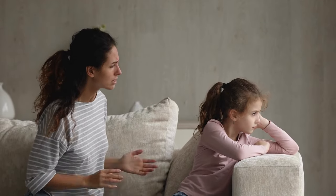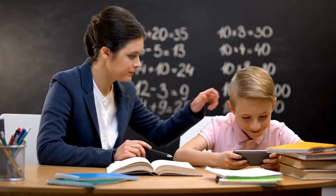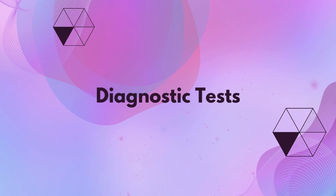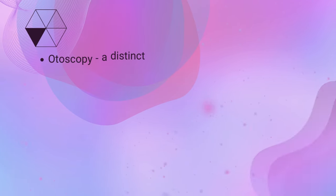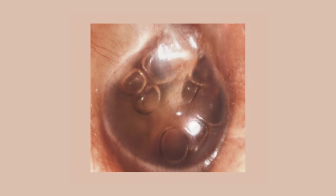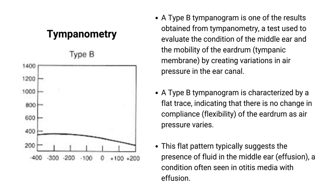Behavioral changes or irritability might also surface due to discomfort or difficulty hearing, and academic performance issues could also emerge, often related to hearing difficulties. Diagnosis of serous otitis media typically involves a medical history review and a thorough physical examination by an ENT doctor. Diagnostic tests include otoscopy, where the doctor examines the ear with an otoscope to visualize the eardrum and check for fluid presence. Tympanometry measures the movement of the eardrum in response to air pressure, indicating fluid in the middle ear — a Type B tympanogram. Finally, audiometry usually shows mild to moderate conductive hearing loss due to fluid accumulation that dampens the movement of the eardrum and ossicles.